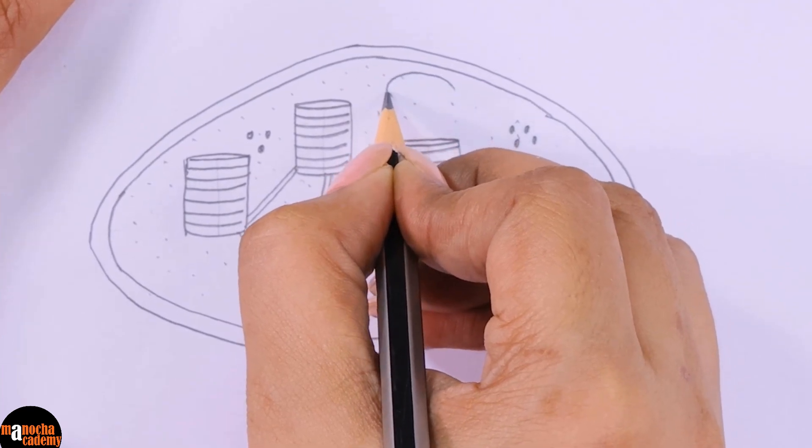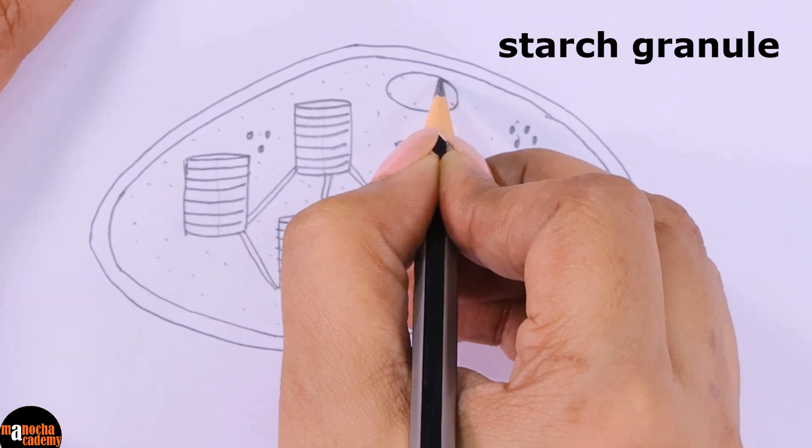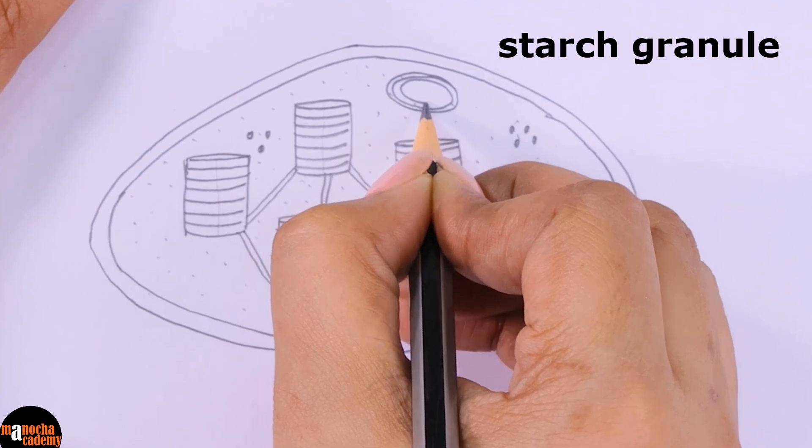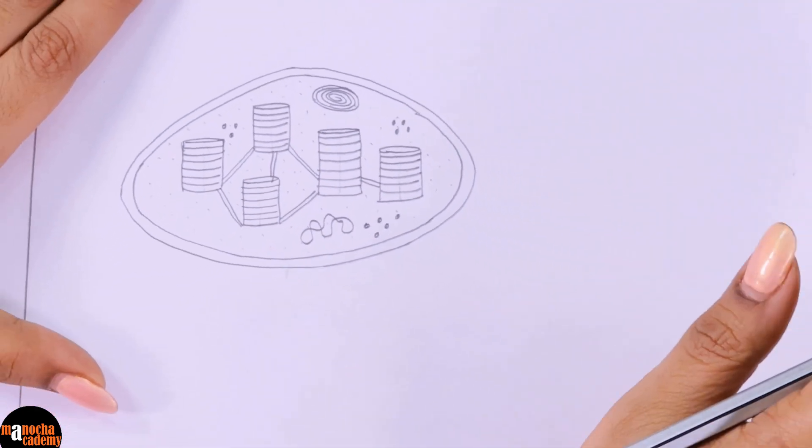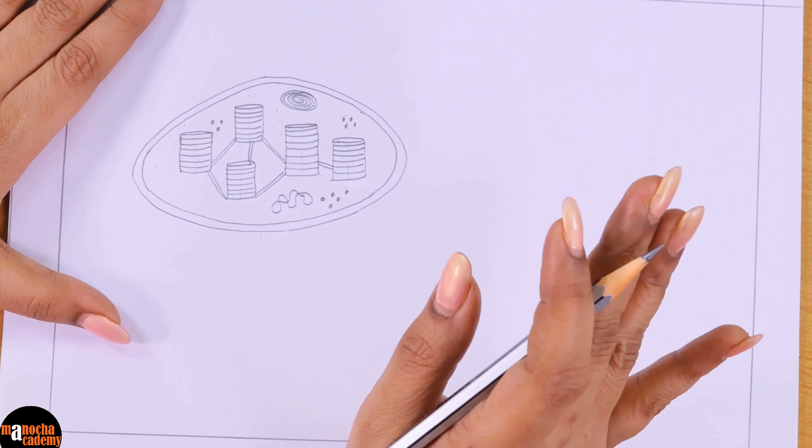Since chloroplast photosynthesizes and produces starch, you can find starch granules which we draw like this. So with that the diagram of the chloroplast is complete.